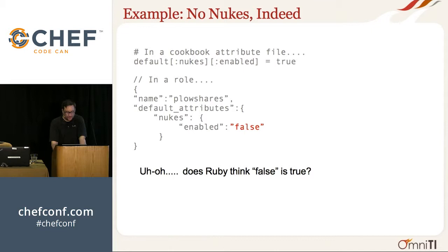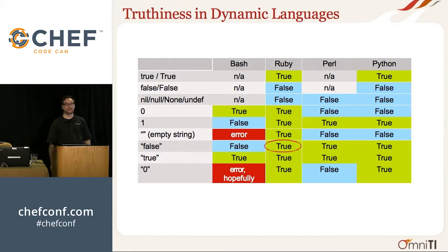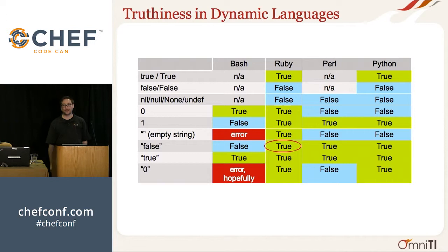What happened? We're setting enabled to be quote 'false' unquote. Ruby doesn't think quote 'false' unquote is false. Here are four common dynamic languages — the only two false things in Ruby are the literal false and nil. Everything else is true: an empty array, an empty string, zero — it's all true. So the string 'false' is truthy in Ruby, and the world just ended.